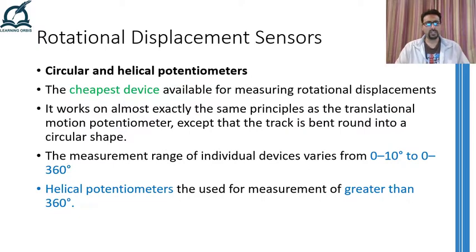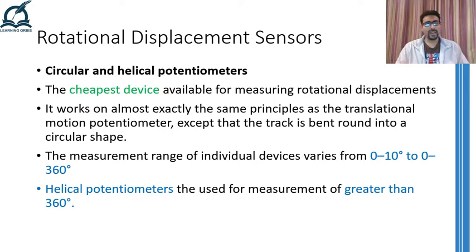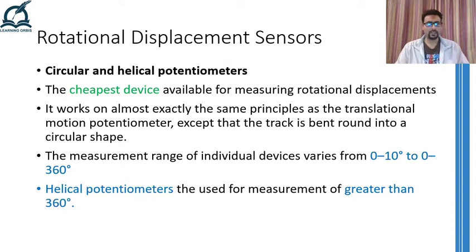If you followed the video on linear displacement sensors, you went through the oldest and perhaps cheapest devices used to measure linear displacement — linear potentiometers. Not surprisingly, potentiometers are also available in circular or even helical form. Therefore, the slider movement instead of being linear is circular. The rest of the theory and considerations are exactly similar to linear potentiometers. Normally these devices can measure any rotation less than a complete circle, that is 360 degrees.